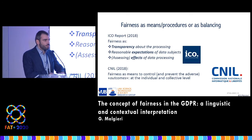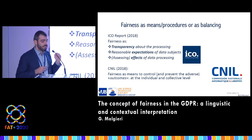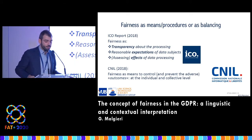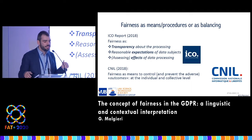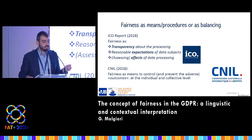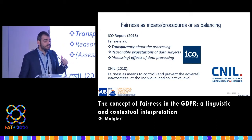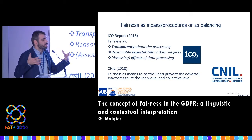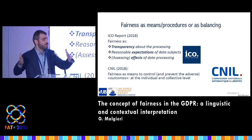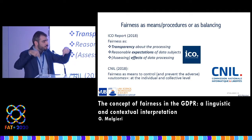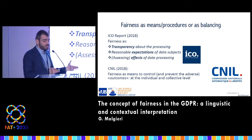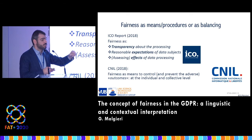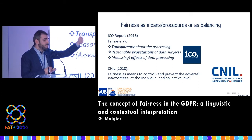Two important data protection authorities also contributed: the UK one, the ICO, and the French one, CNIL. In the same year they both released opinions on what fairness means and added something more. Of course it's transparency, which we all agree is in the GDPR, but it's also about reasonable expectations of data subjects — you need to take those into account — and you need to assess the effects of data processing, looking at outcomes. CNIL similarly focuses on outcomes at the individual or collective level: you look at whether there are damages or harms, or you predict whether there can be, and in that case this is unfair.